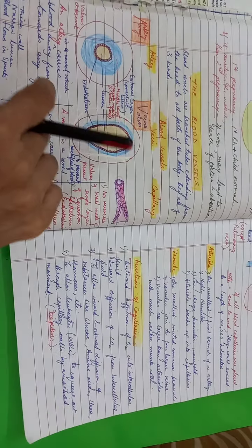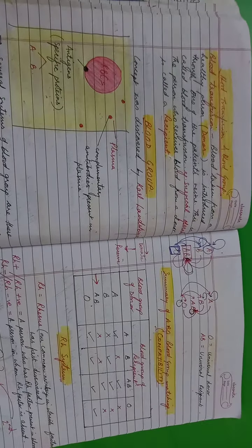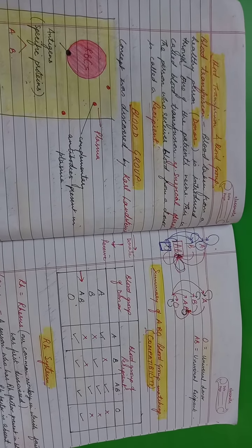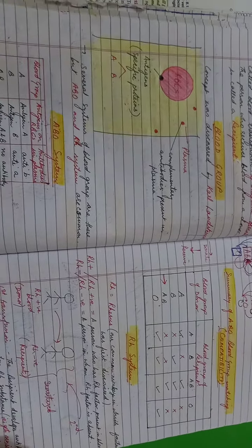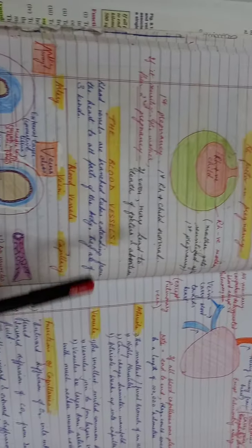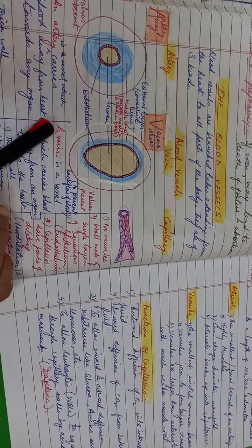Good evening children. This is my fifth video on the chapter the circulatory system. In the previous video, I discussed blood transfusion and determination of blood groups on the basis of antigen present on the surface of RBC. Then I explained the ABO system, the compatibility table of blood groups, the RH system, and then the importance of RH system in pregnancy.